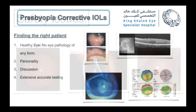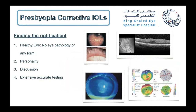Before going deep into premium IOLs, after taking proper history and understanding the patient's desires, you must find the right patient — a healthy eye with no pathology. The patient should have no irregular astigmatism, corneal pathology, maculopathy, or glaucoma. They should be motivated, with a forgiving personality, away from type-A personality. The discussion must be thorough, and you need extensive, accurate testing to not miss any detail.